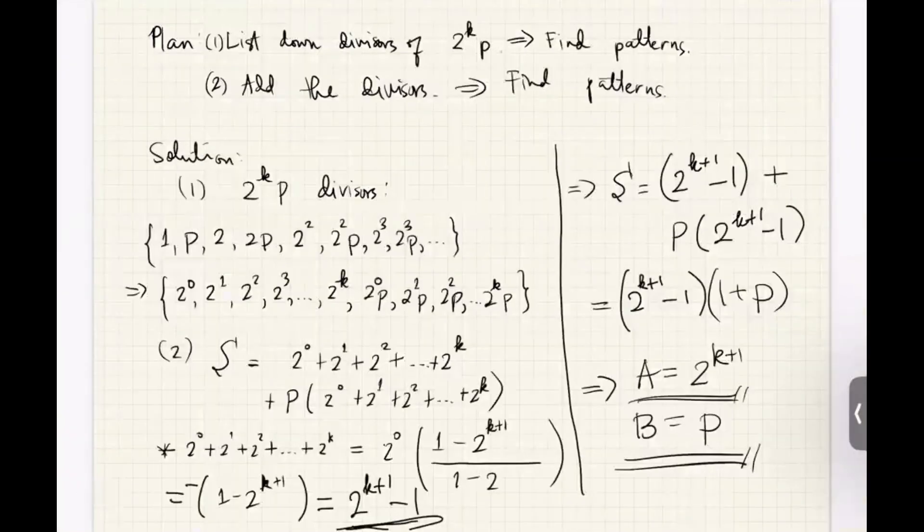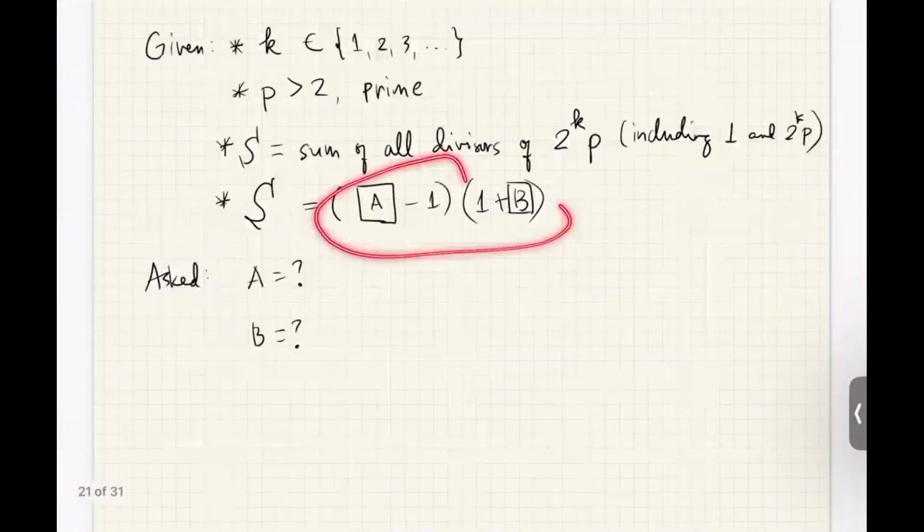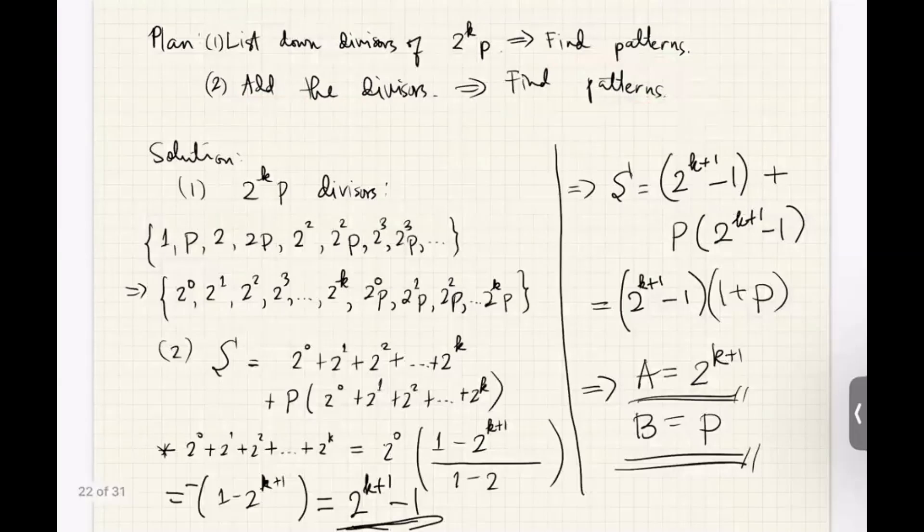Now, how do we solve this? Well, actually, it's pretty intuitive. We just list down the divisors of the number, and let's try to find patterns. Why do we need to find patterns? Because we want to add all of them. And if we find some patterns in the divisors, it might be easy to find a sum for them, because we know some formulas that actually allow us to take sums. So we might be able to force them into that form. So let's do that. First, let's list down all the divisors.